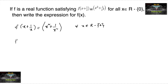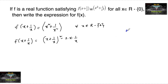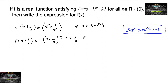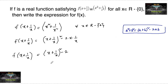This function f can also be written using the identity a² + b² = (a + b)² − 2ab. So f(x) = x² + 1/x² equals x + 1/x whole square minus 2. Therefore, f of (x + 1/x) is equal to (x + 1/x)² − 2.